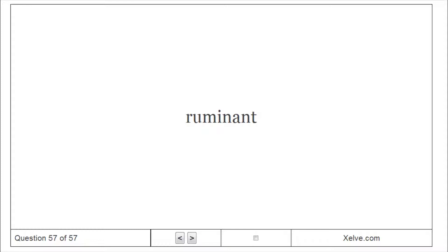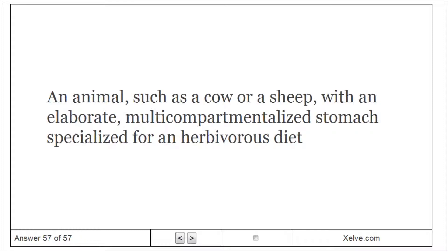Ruminant – an animal, such as a cow or a sheep, with an elaborate, multicompartmentalized stomach specialized for an herbivorous diet.